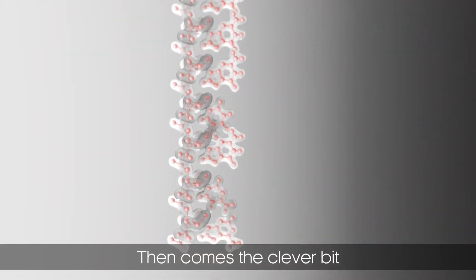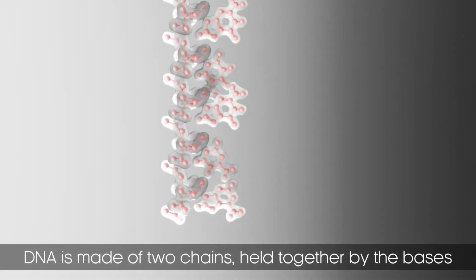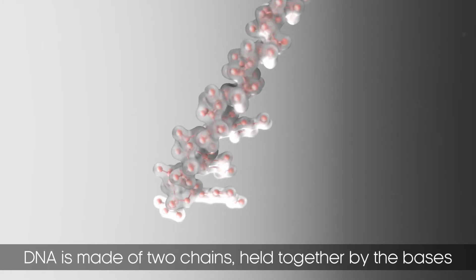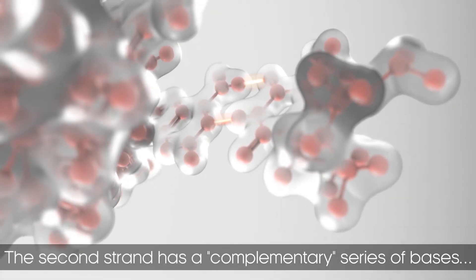Then comes the clever bit. DNA is made of two chains held together by the bases. The second strand has a complementary series of bases.